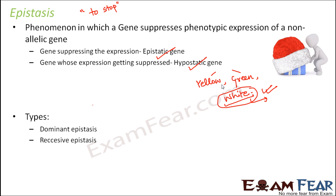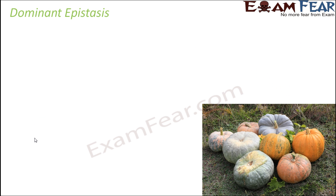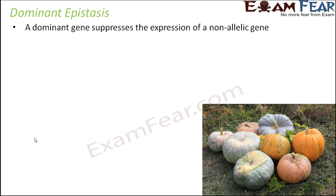Under epistasis, we are going to talk about two types: dominant epistasis and recessive epistasis. In dominant epistasis, a dominant gene suppresses the expression of a non-allelic gene. The dominant allele of the epistatic gene must be present for the epistatic gene to perform its action — which is to hide the phenotypic expression of the other genes. The example of dominant epistasis is the fruit color in squash.